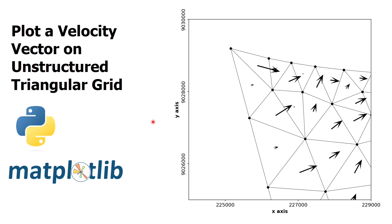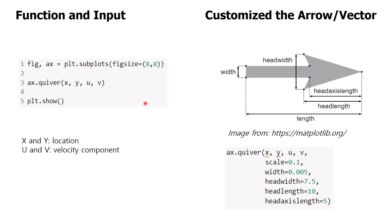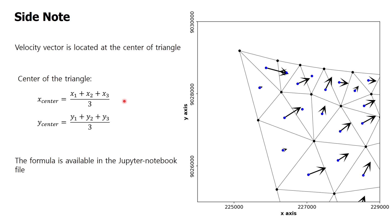In this tutorial video, I will show you how to plot a velocity vector using matplotlib on an unstructured triangular grid. The function we are going to use is the quiver function from matplotlib. This function takes four basic input variables: x and y are the location of the velocity vector, and u and v are the velocity components in the x and y direction. I will also show you how to customize the arrow or the vector, such as changing the arrow length and shape.